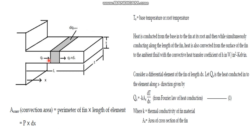For this elemental area, let qx be the amount of heat entering the elemental area, qx+dx be the amount of heat leaving the elemental area by conduction, and dq_convected be the amount of heat convected to the surrounding atmosphere. These are the three important heat transfers in this elemental area.